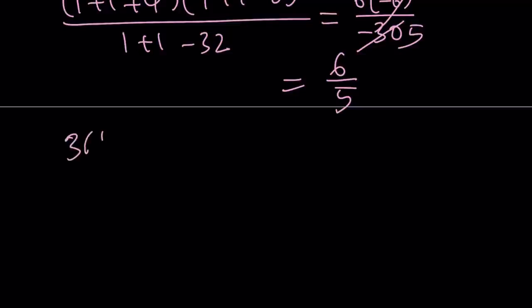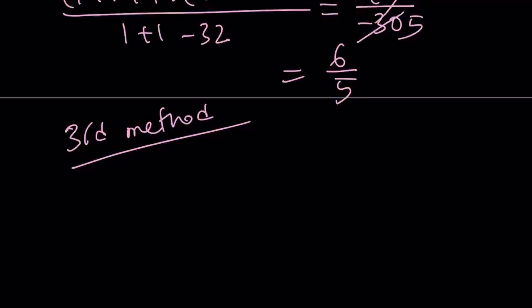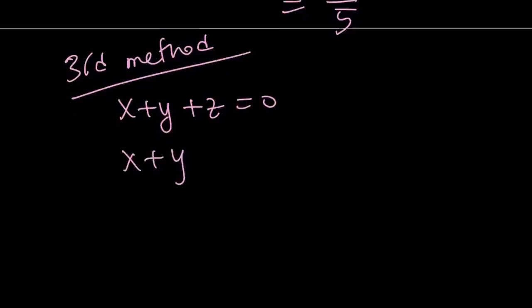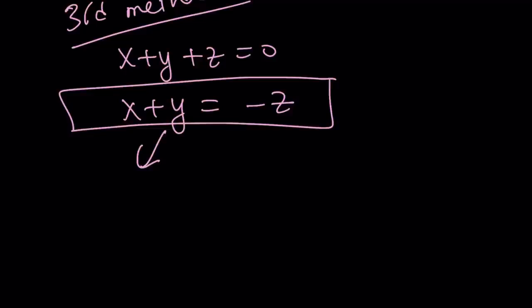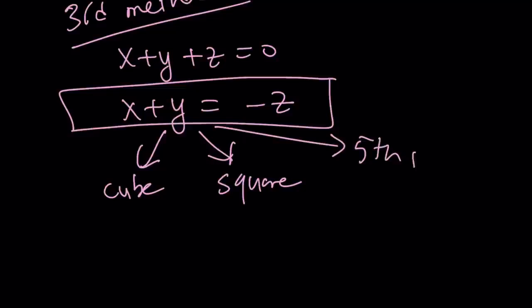Here's an alternative — a third method. It basically involves the fact that you can solve for x plus y and replace it with negative z, then raise that to the second power, third power, and fifth power. You get different expressions, put it all together, and at the end you get 6 over 5 again.